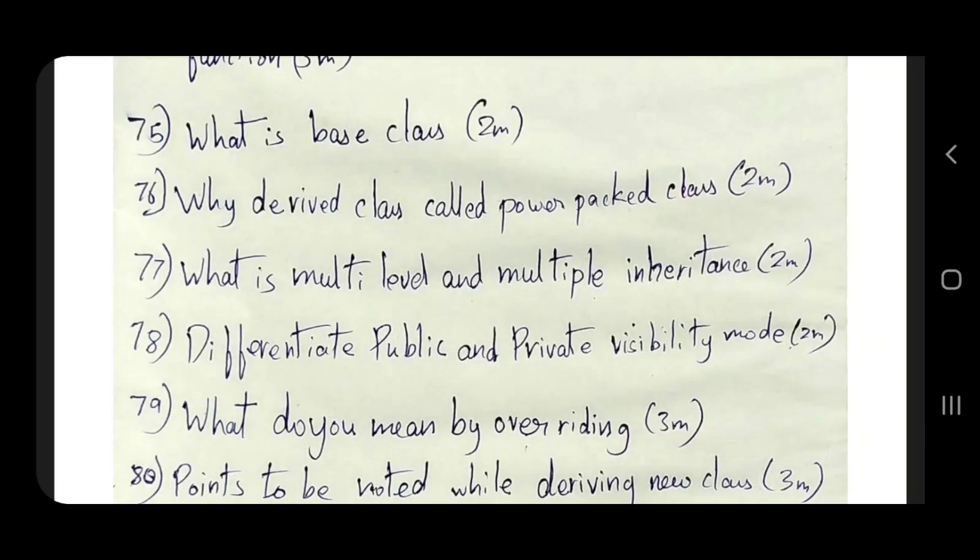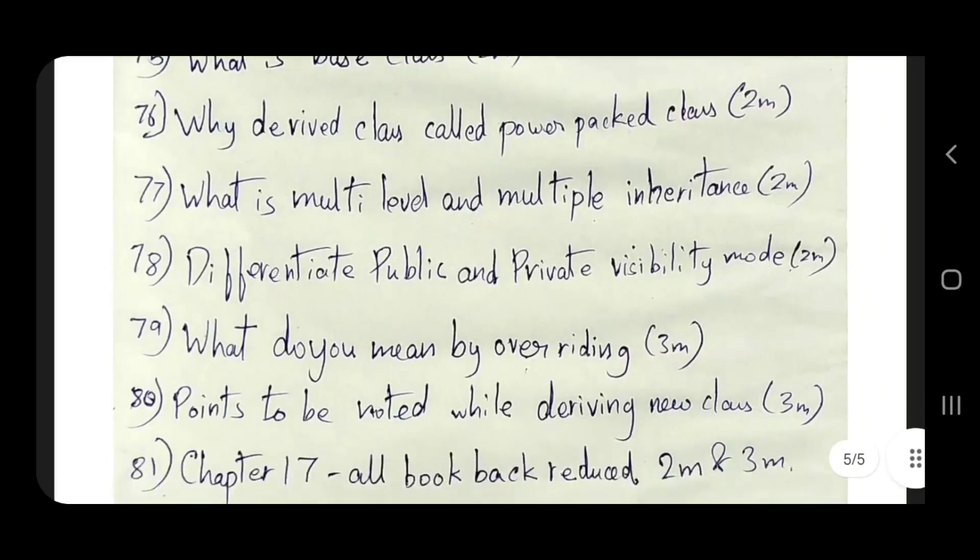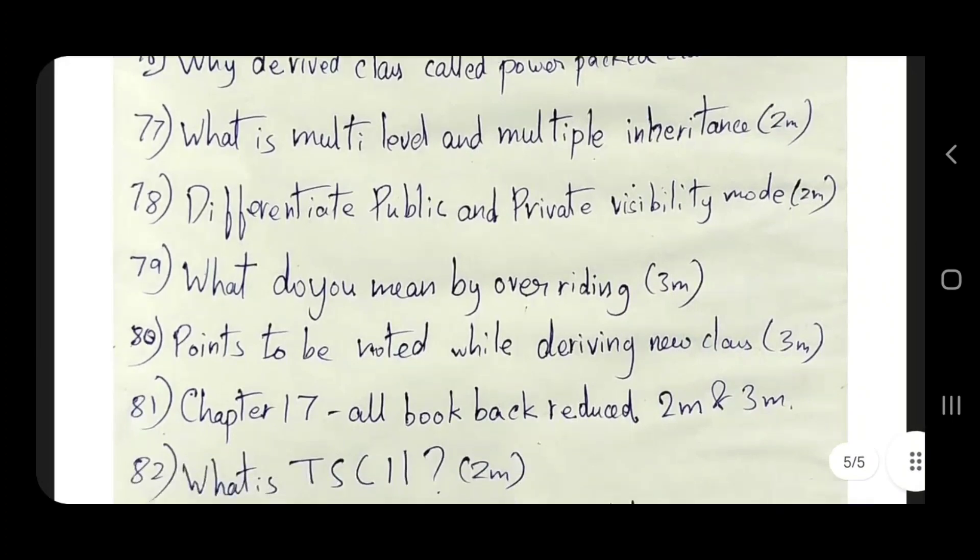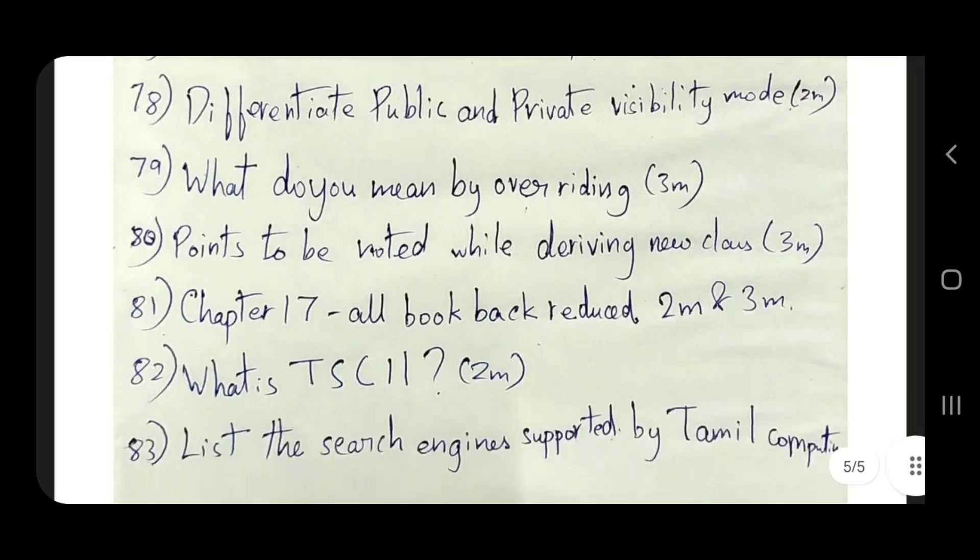Visibility mode - public and private. What do you mean by overriding? Very important, 3 mark. Points to be noted while deriving a new class - noted. Chapter 7, all book back.